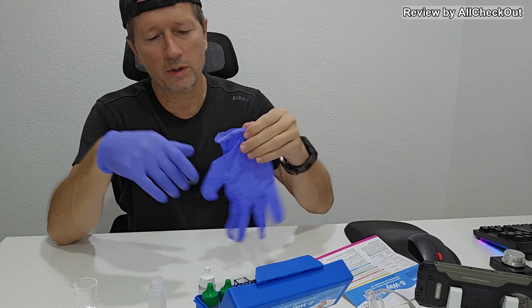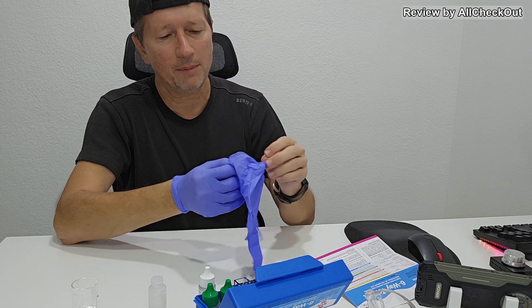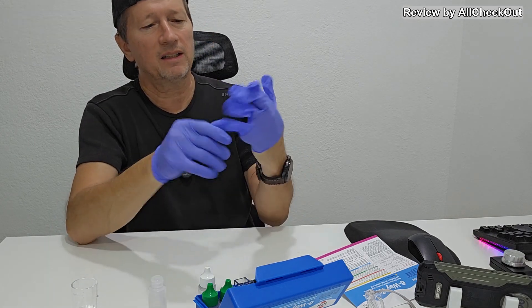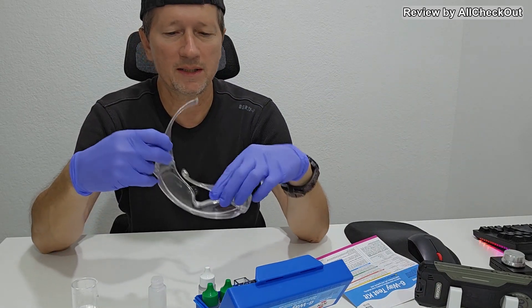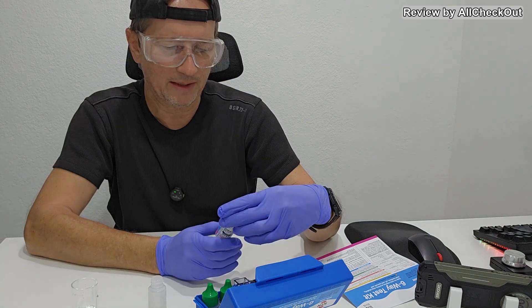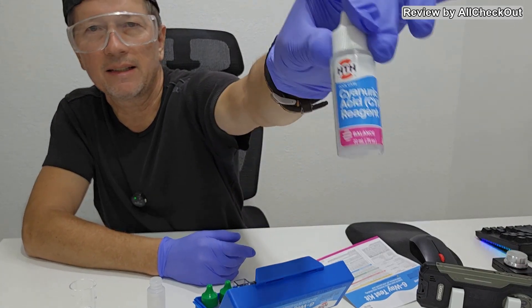I'm using here some gloves, maybe have also some towel ready, paper towel or something like that in case you're producing some spills. And then I'm using also these safety goggles. Now we need this cyanuric acid testing chemical.